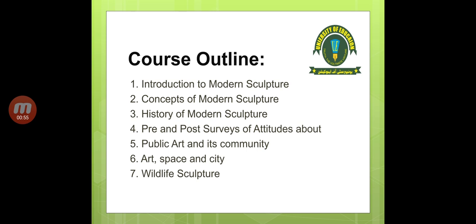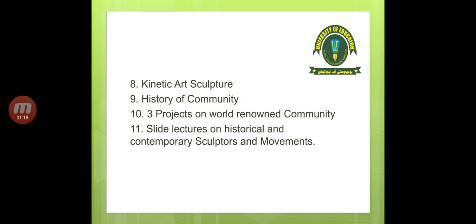First of all I will talk about the course outline. It includes the introduction to modern sculpture, concepts of modern sculpture, history of modern sculpture, pre and post surveys of attitudes about public art, and its community art space and city wildlife sculpture, kinetic art, sculpture history of community, three projects on world renowned community, and slide lectures on historical and contemporary sculptors and movements. So this is the first lecture.